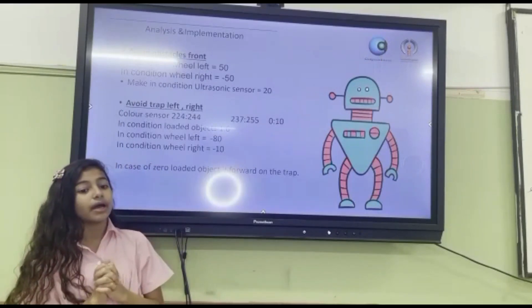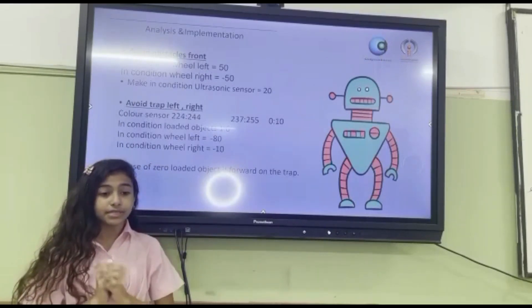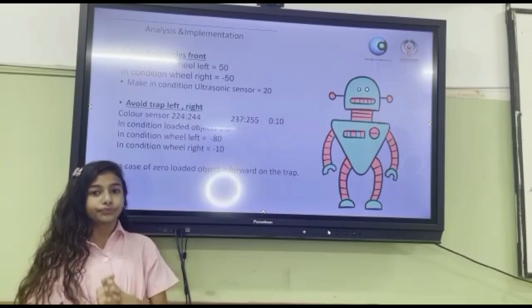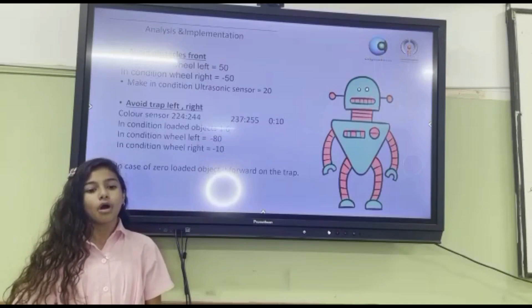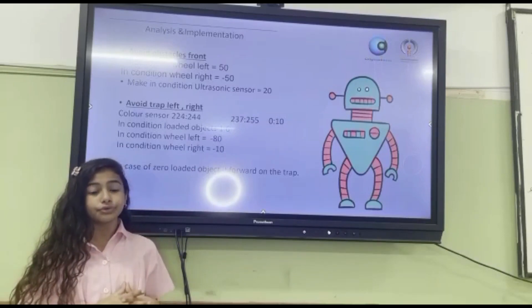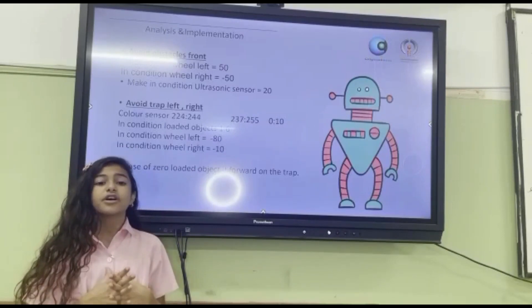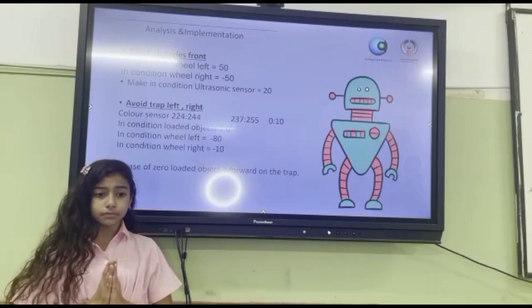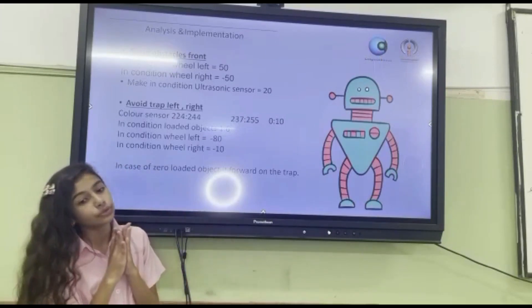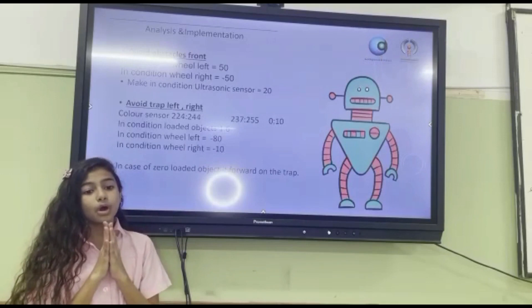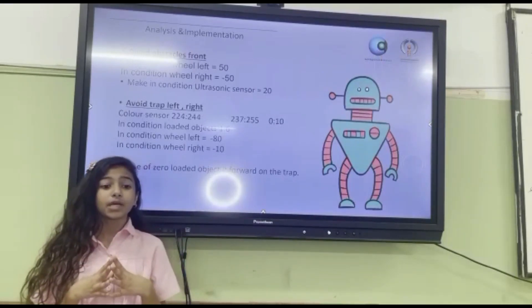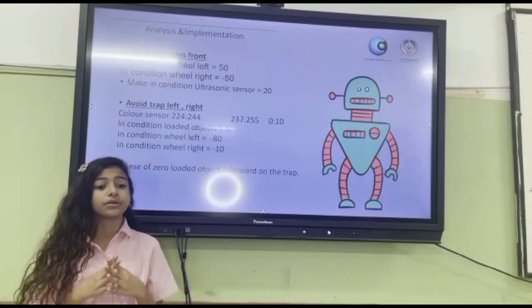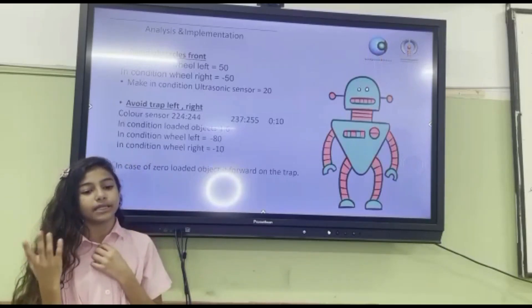Avoid color sensor 224, 244, 237, 255, 0 to 10. In condition wheel right equals 100, in condition wheel left equals negative 80, in condition wheel right equals negative 10.